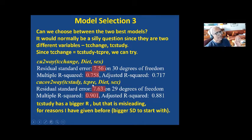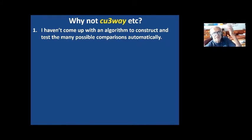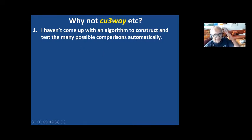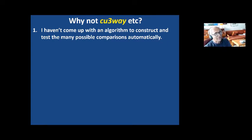Somebody may say, I have a situation with three factors — why doesn't Shaker give me a function to do that? The CU functions don't have that, mainly because the coding starts to get very complex. It was pretty messy even for two-way, and I don't have an algorithm to construct a test of many possible comparisons automatically.